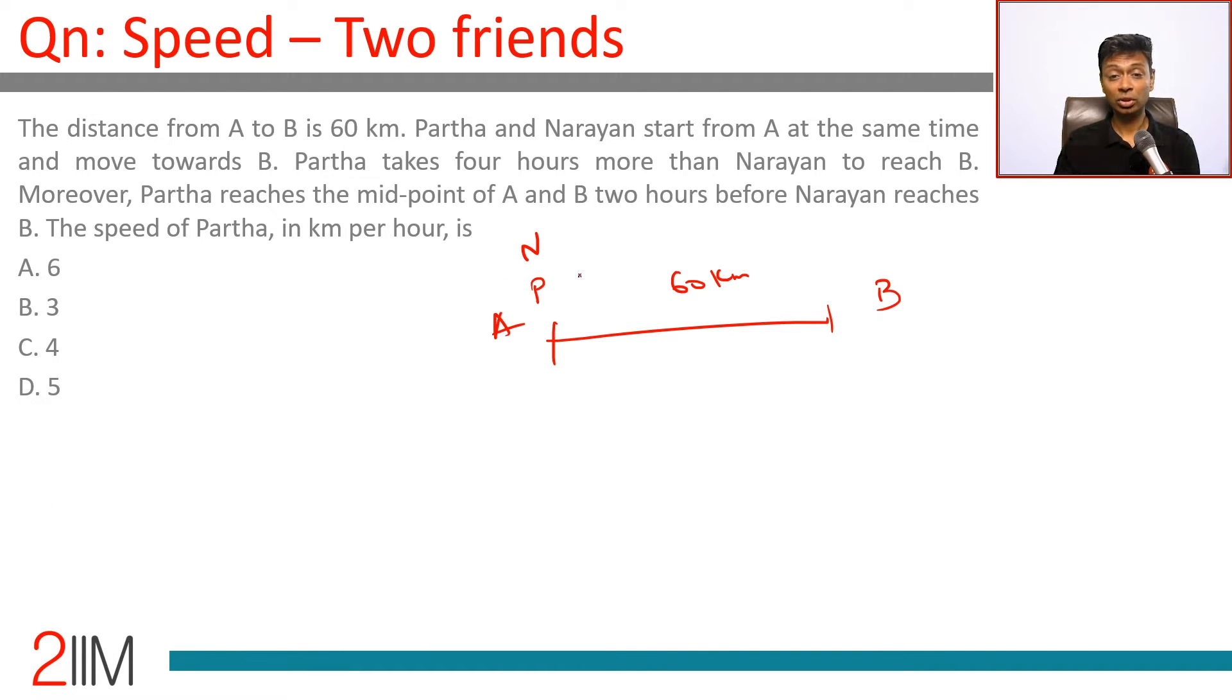So if Narayan takes X hours, Partha takes X plus 4 hours. Moreover, Partha reaches the midpoint of A and B at X plus 4 by 2 hours.